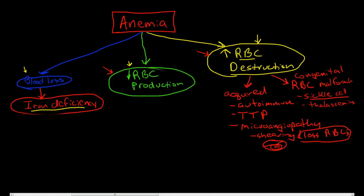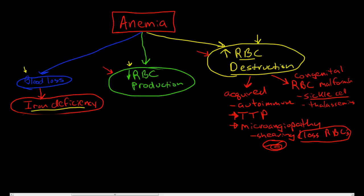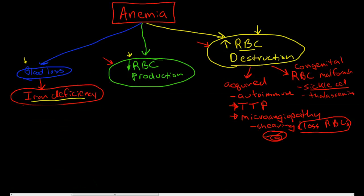TTP and microangiopathies are really fascinating. I'm not going to be covering them in this course, but I'll probably make an optional video in the future because I find the pathophysiology very interesting. Those are some of the causes of red blood cell destruction. For the remainder of this video, I'm going to talk about anemias caused by decreased red blood cell production.